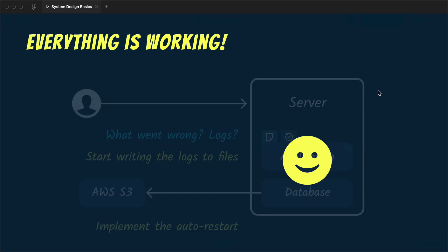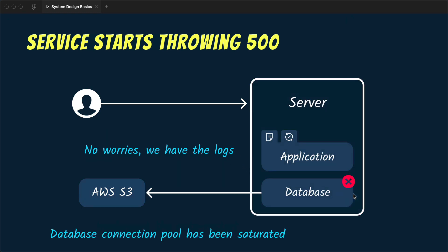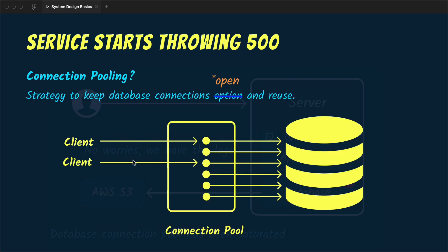Now everything is working and you're ready to tackle future issues because you have logs and auto-restart in place. But after some time the application is up yet you start getting 500 errors again. Since you have logs you can look at them to find the cause. You check the logs and find that the database connection pool has been saturated and the application cannot access the database because it cannot create new connections. Before moving on, let's talk about connection pooling — it's a strategy to keep database connections open and reuse them because connecting to a database can be an expensive task.